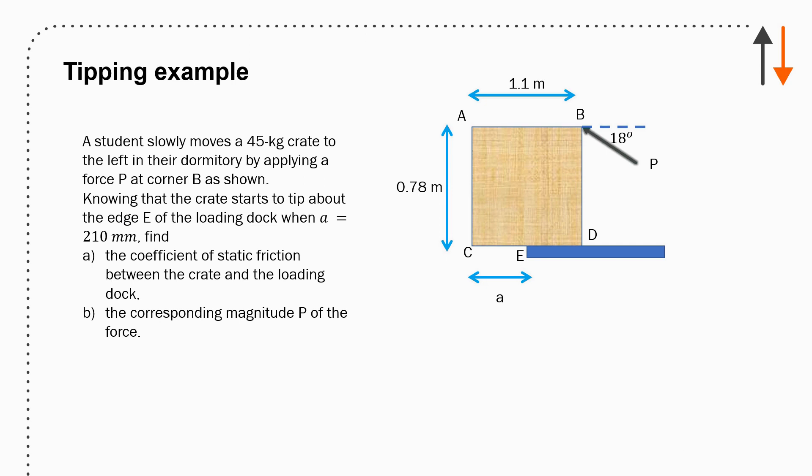I have daughters who have to push heavy things around their dorms and things like that. And so let's sort of go with the case where a student moves a 45 kilo crate to the left in their dorm by applying a force P at the corner B as shown. So you can see all the forces there. P is the one in green. You're given dimensions of 1.1 meters on the top surface. And the vertical surface is 0.78 meters. You know when the crate starts to tip about the edge, when that distance about E from edge E is about 210 millimeters, find the coefficient of static friction between the crate and dock and the corresponding magnitude P.